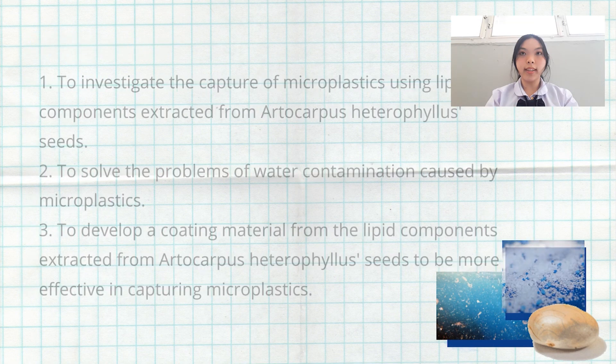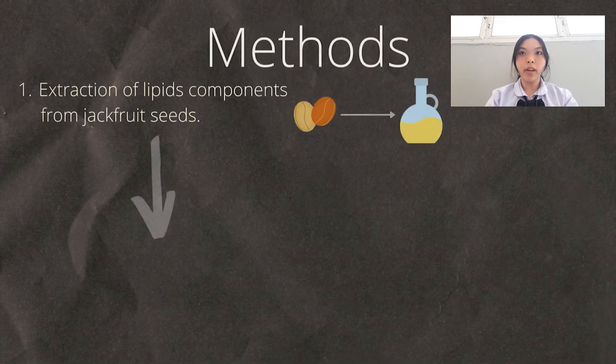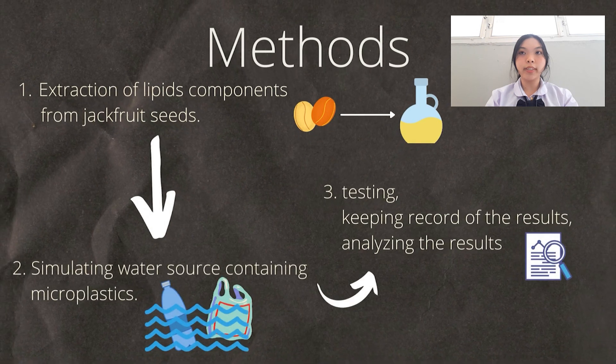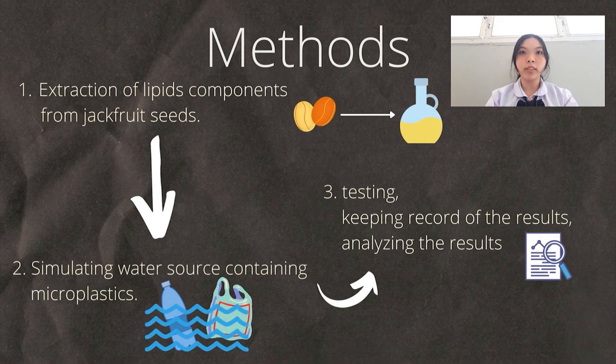The next slide is the method. We have three processes: first, extraction of lipid components from the jackfruit seed; next, simulating a water source containing microplastics.